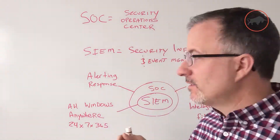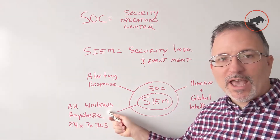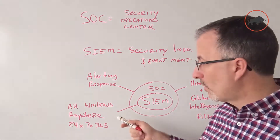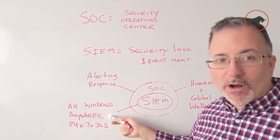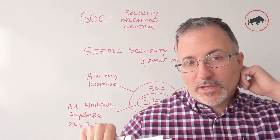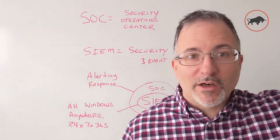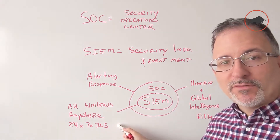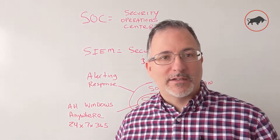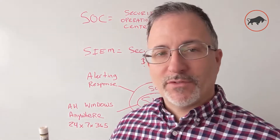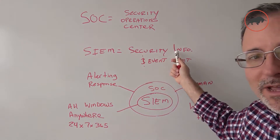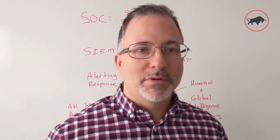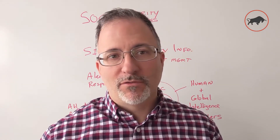What the SIEM does for us is it provides an ability to have all of the data that your Windows computers and servers are collecting — no matter where they are, anywhere on the network, whether they're at the office, at the coffee shop, the hotel room, working from home — 24 by 7 by 365, we are going to aggregate that data. All of the security information and event log data, we put it in one place and analyze it. What we're looking for is badness.